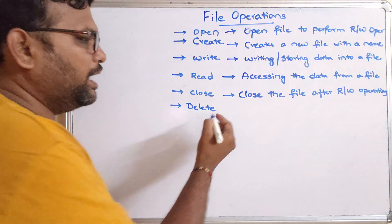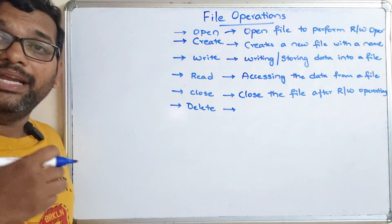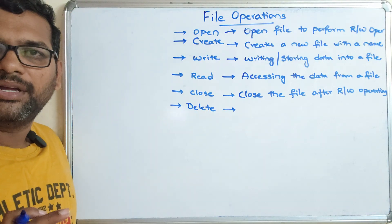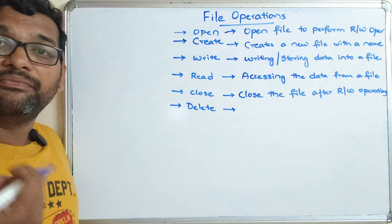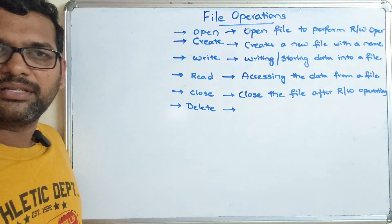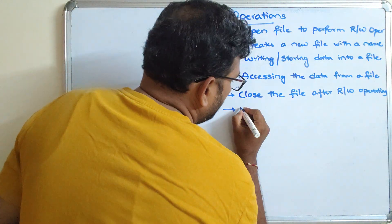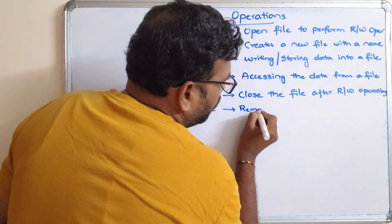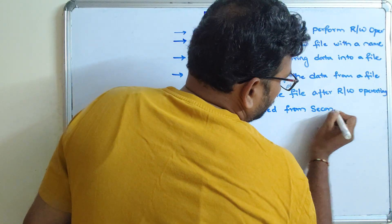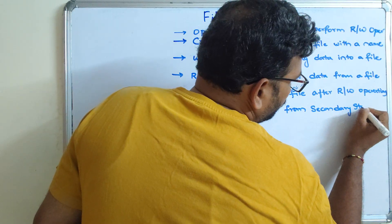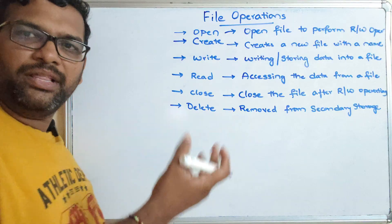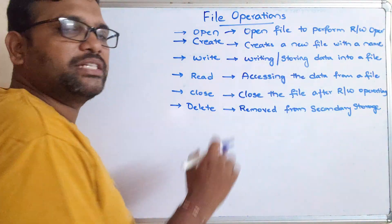Finally, delete will permanently remove the file from the secondary storage. The memory that was occupied by that file will be freed, which can then be used for storing other files. Since a file is a collection of related information stored in secondary storage, delete removes it from that secondary storage.